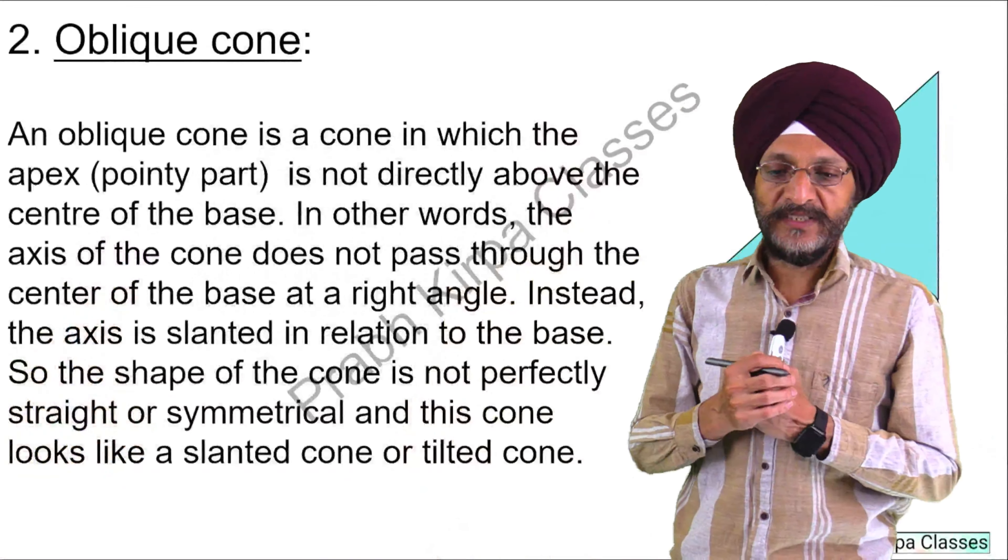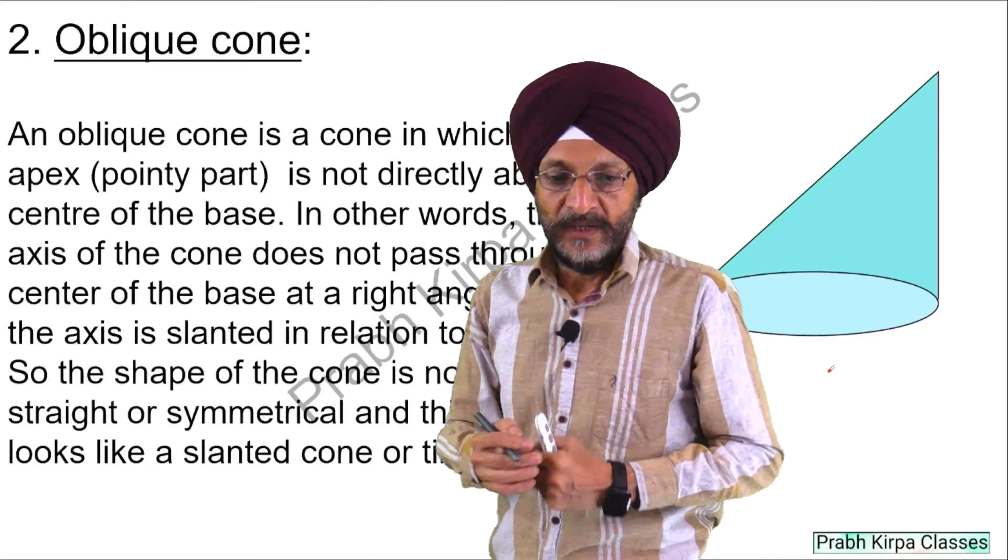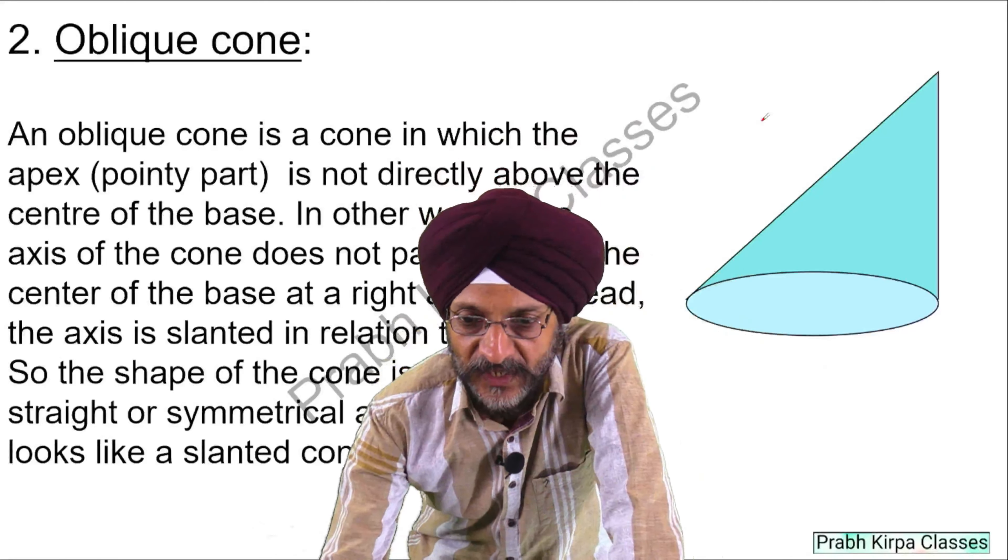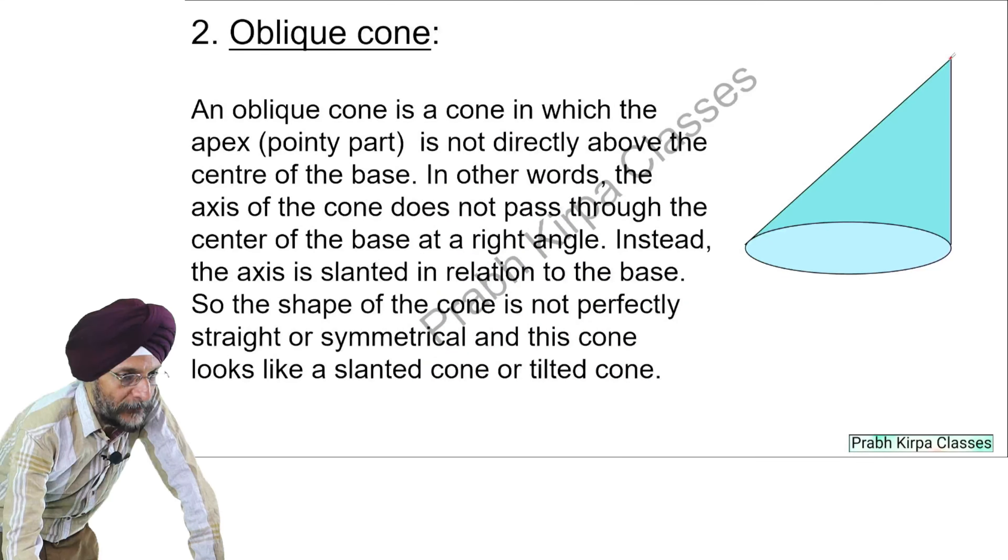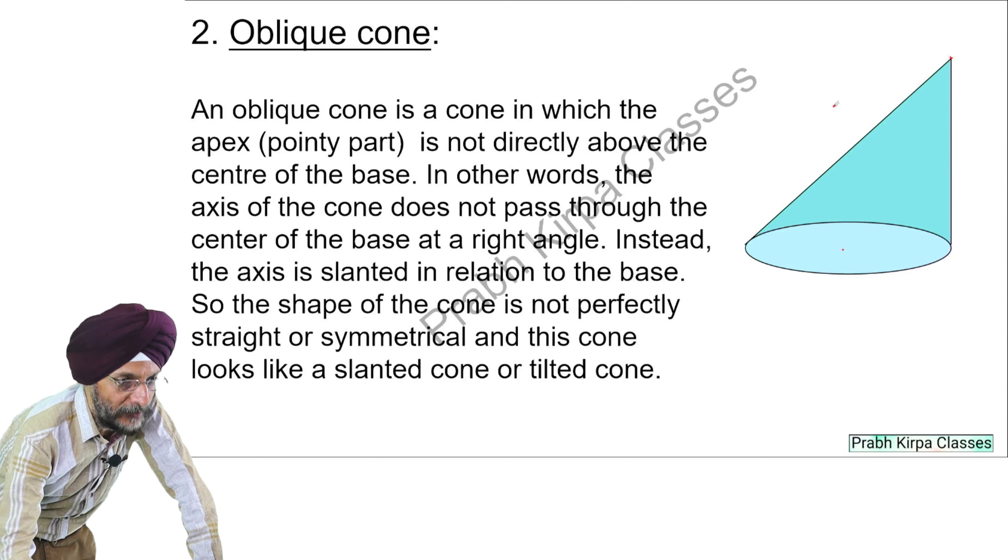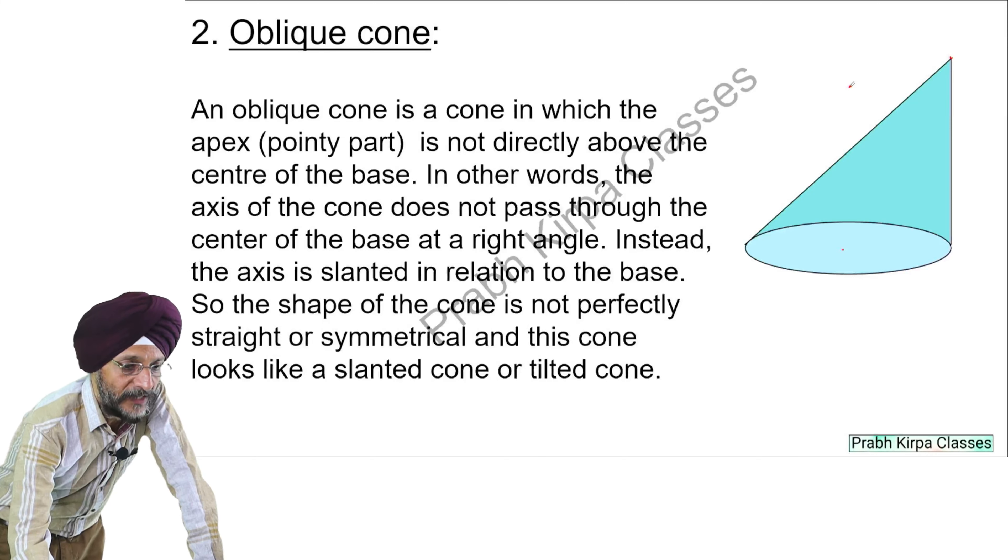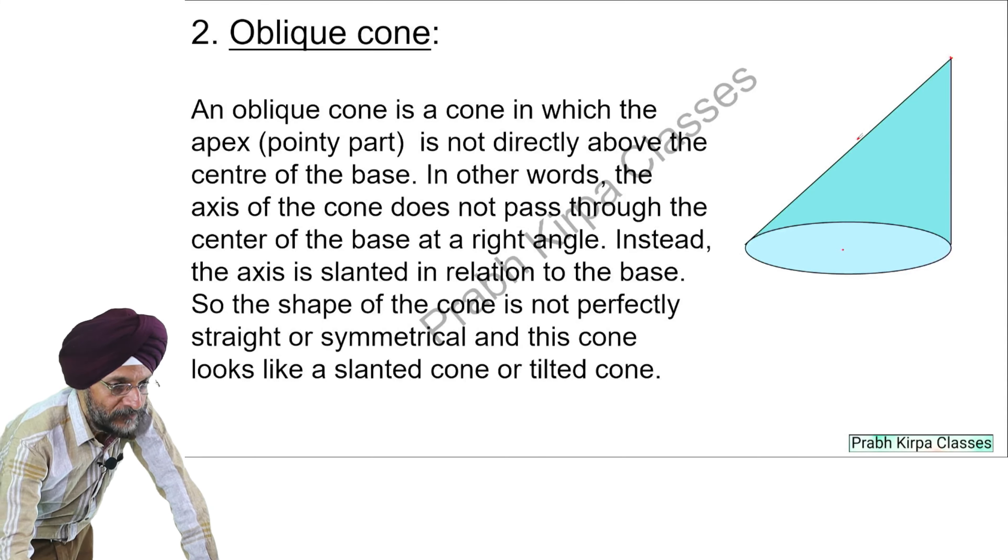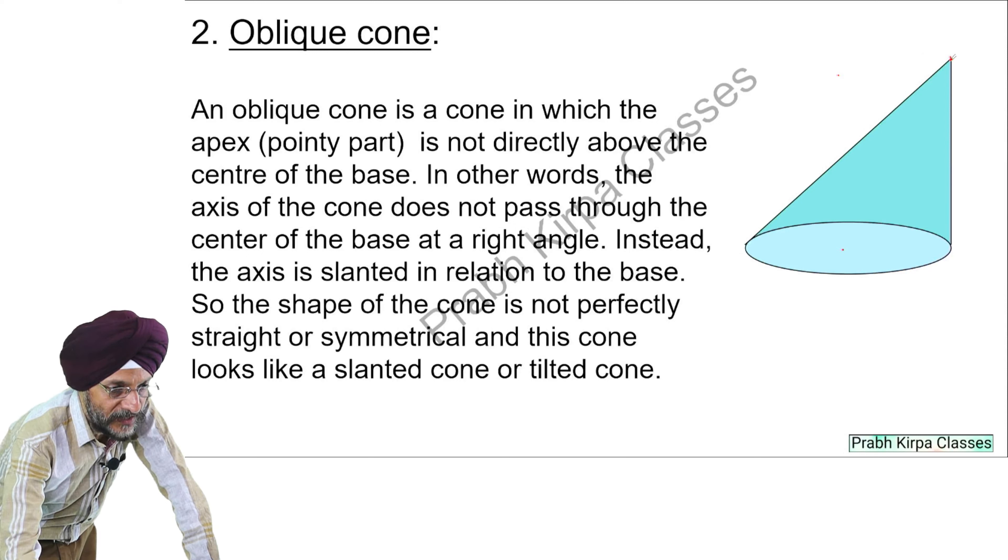The second cone which we will discuss is oblique cone. This cone is one in which the pointy part is not directly above the center of the base. You can see here that if we assume this is the center of the base, then this pointy part is not directly above. If we look directly above the center of this base, it would come here but the pointy part is here.